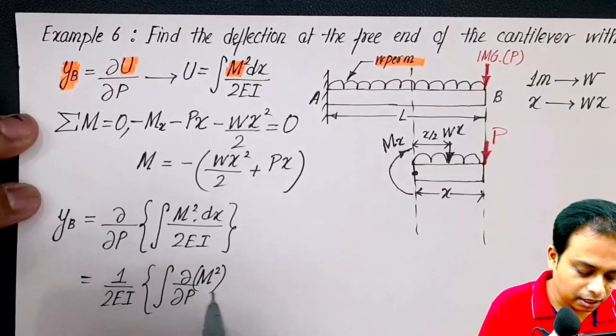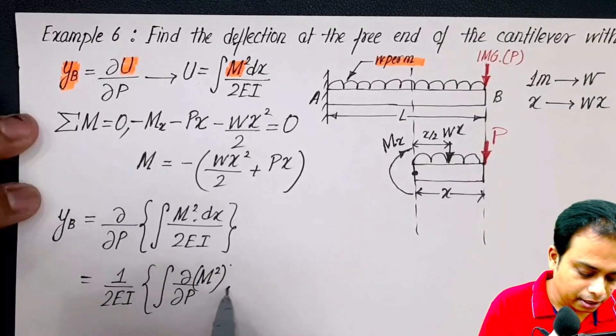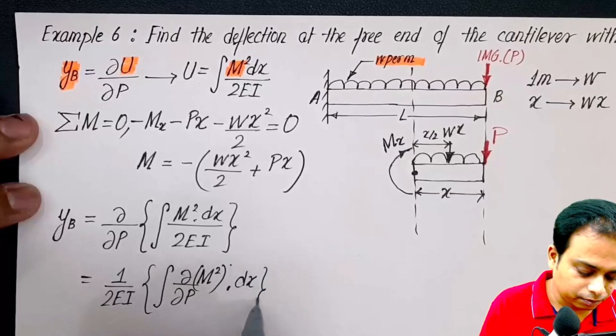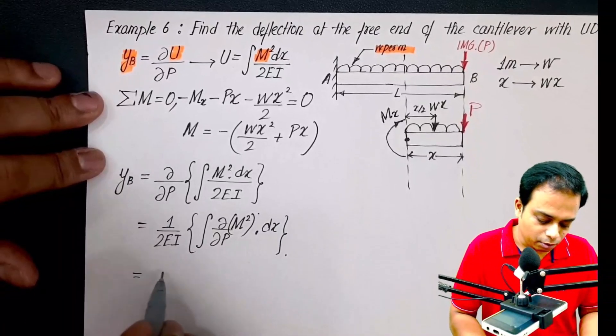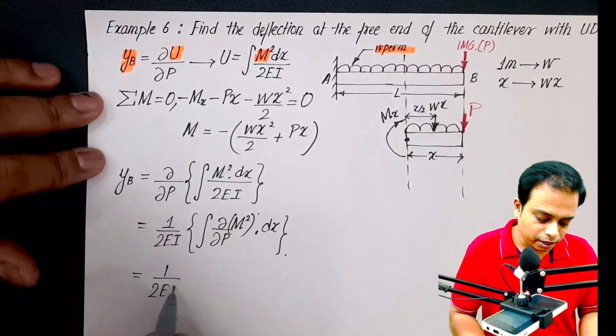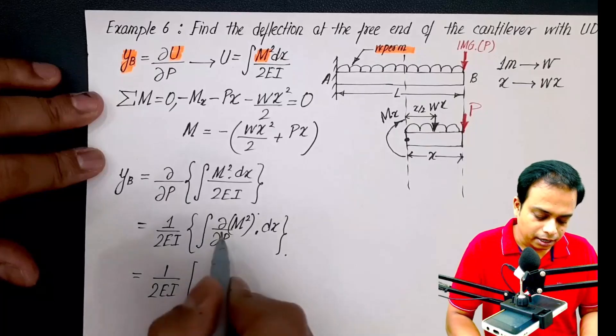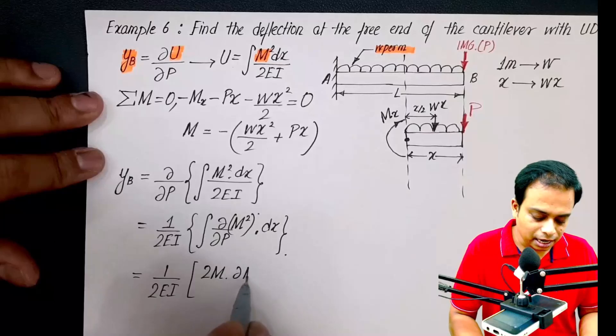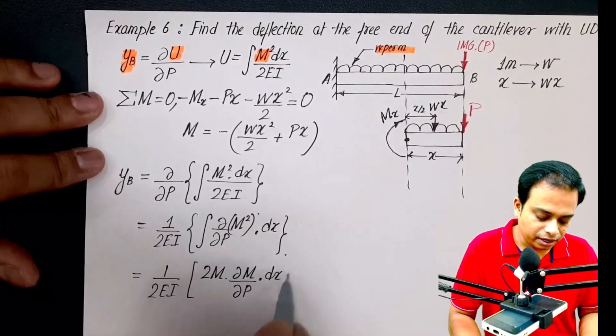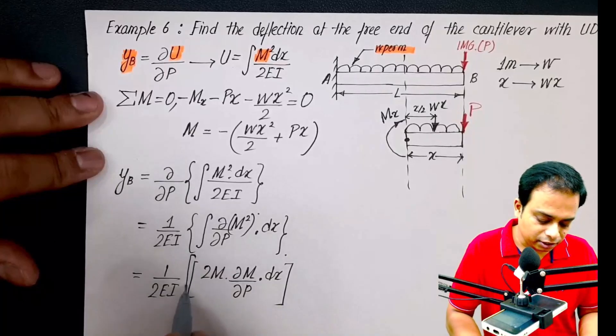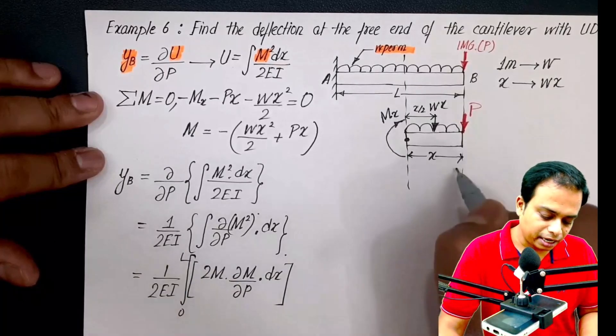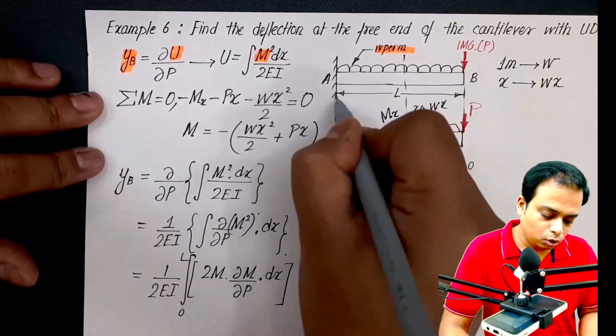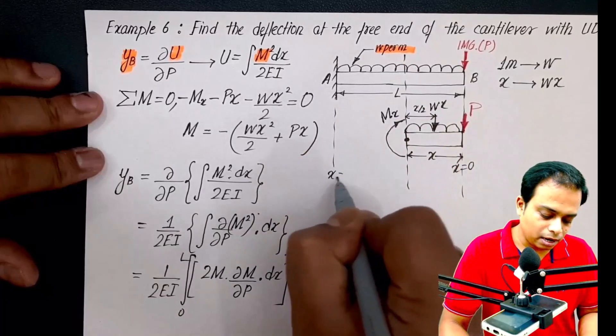We are going to apply the chain rule. One over 2EI, del by del p of m square will be equal to 2m, but it will leave a residue del m by del p, times dx. And this entire stuff has to be integrated from limit x is equal to 0 to x is equal to L.